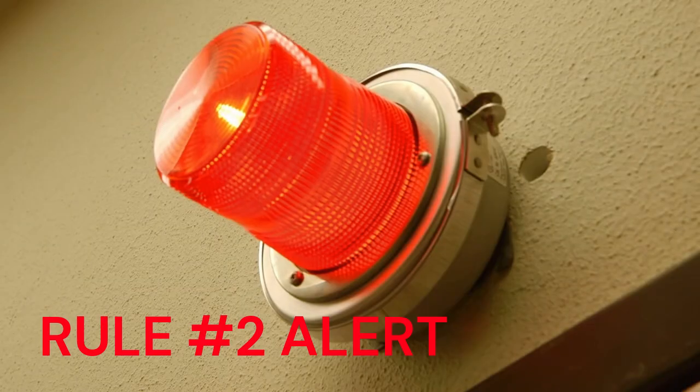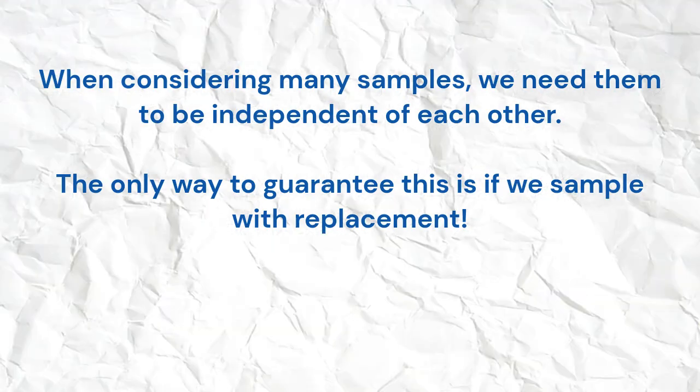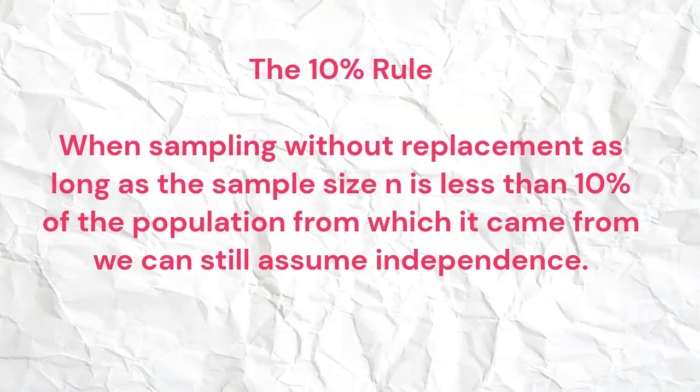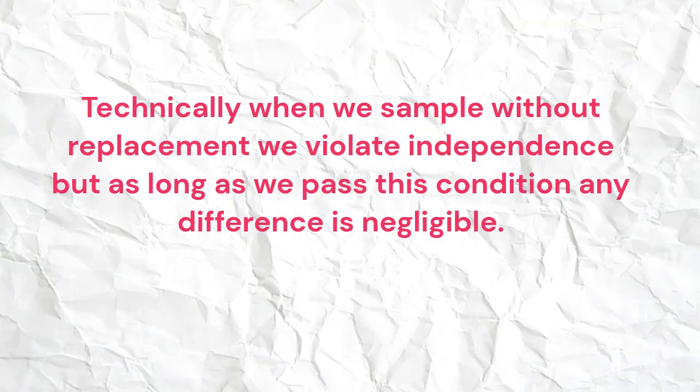Here comes rule number two: since we're talking about multiple samples, we need those samples to be independent of each other. The only way to guarantee independence is to put each sampled group back to possibly be picked again. In the real world we typically don't do that, but we have a rule that says this is totally okay — as long as our sample size, in our case 230, is less than 10% of the entire population, we can still assume independence even if we don't replace the sample.